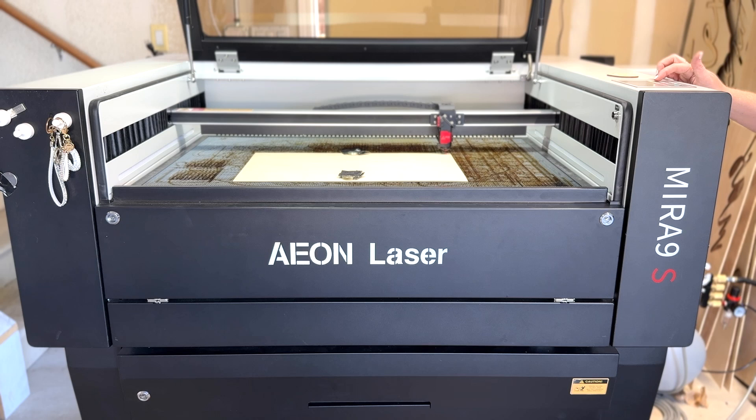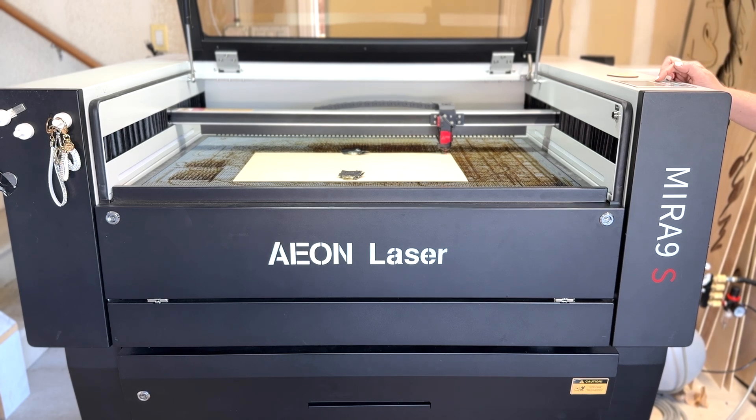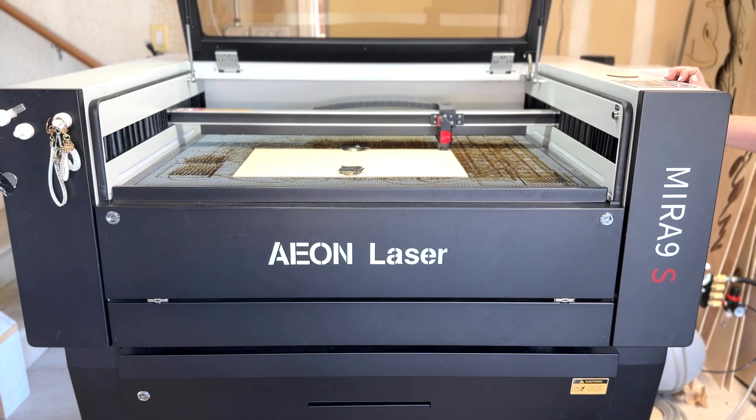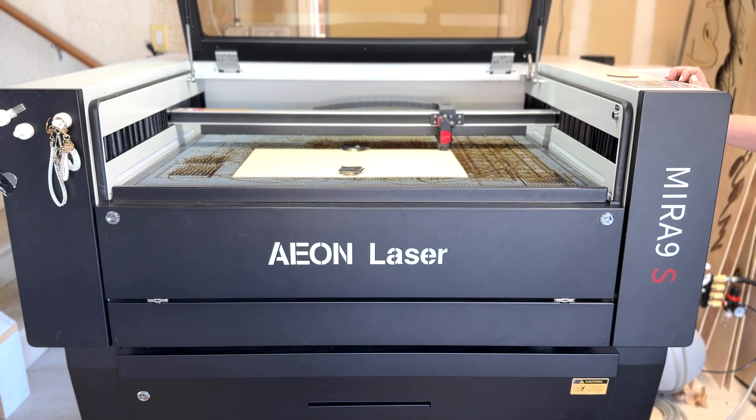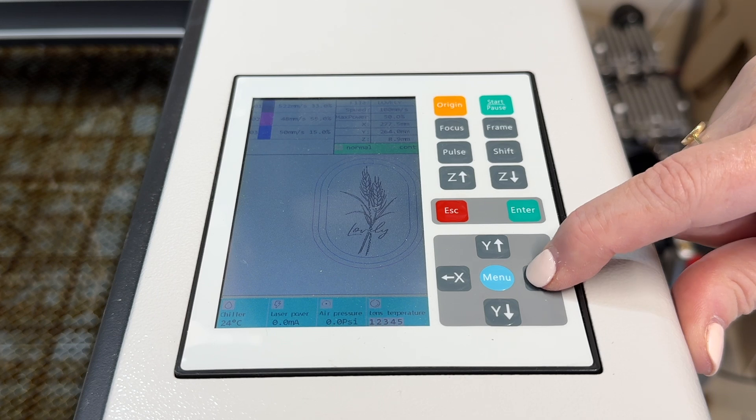Once I have my red dot over my material I'm going to hit the focus button and you'll see that this Mira nine red line auto focuses on the material so that I have my laser head set to the precise distance that it needs to be for this job.